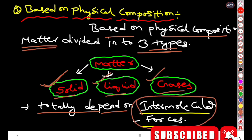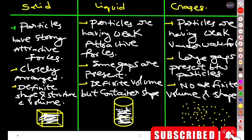What is the classification based on physical composition? Atoms in matter have intermolecular forces — one atom attracts another atom. Based on the attraction forces, we classify matter into solids, liquids, and gases by their physical appearance.